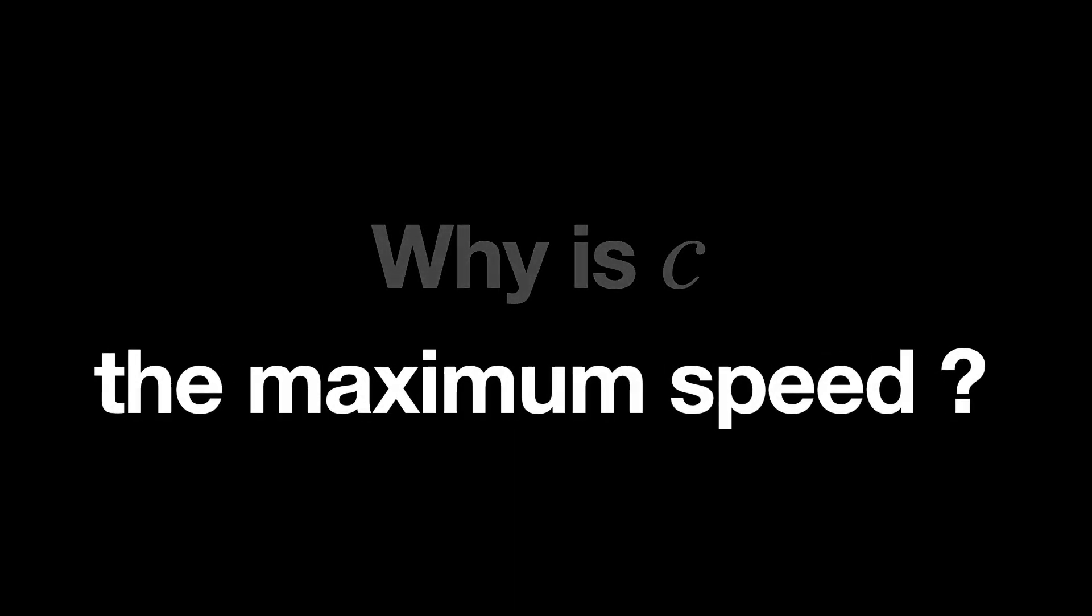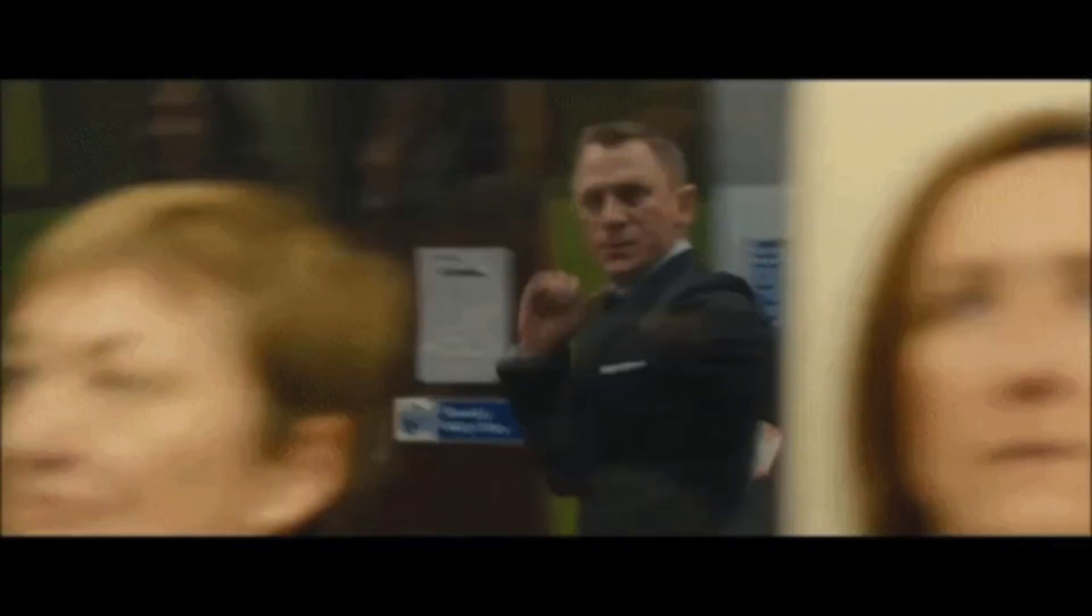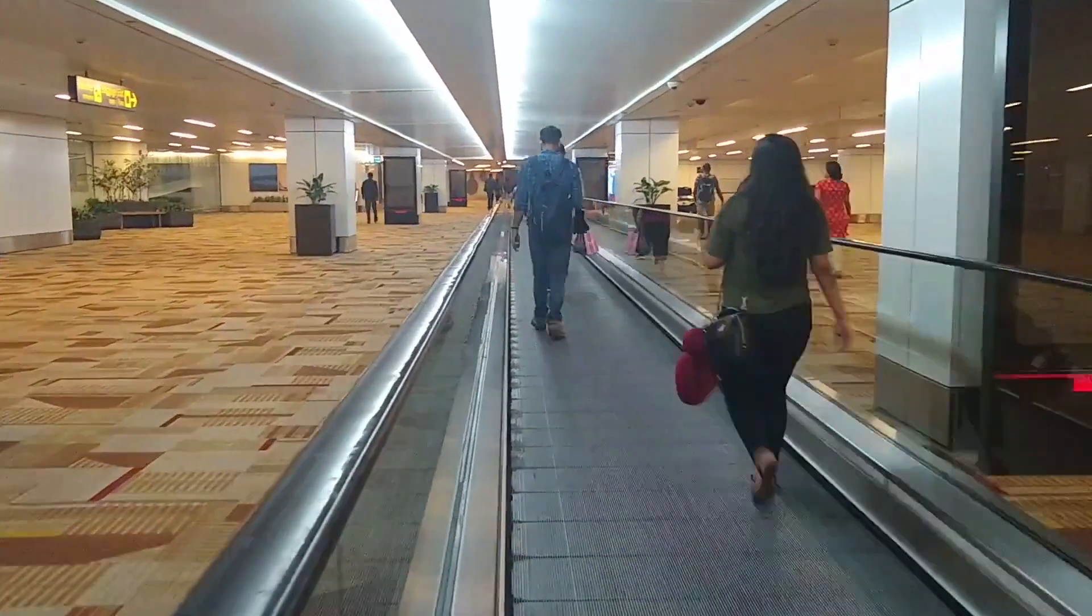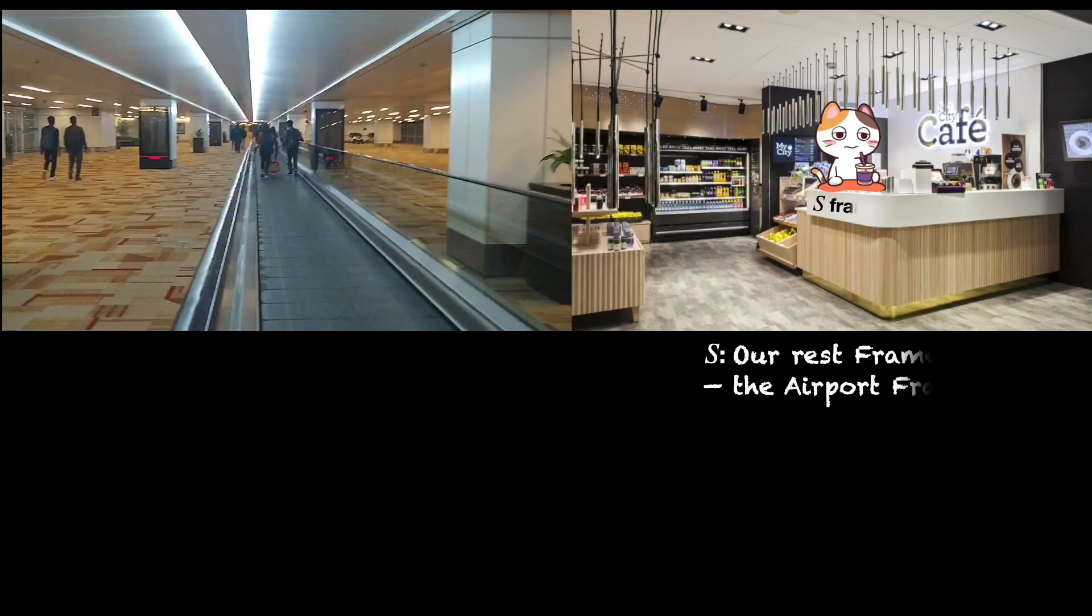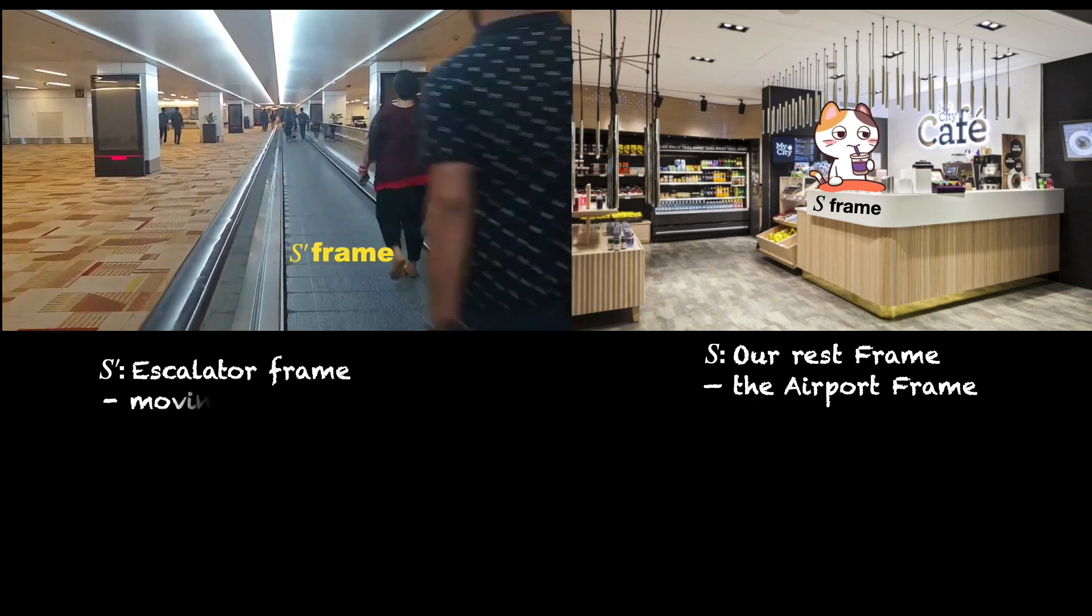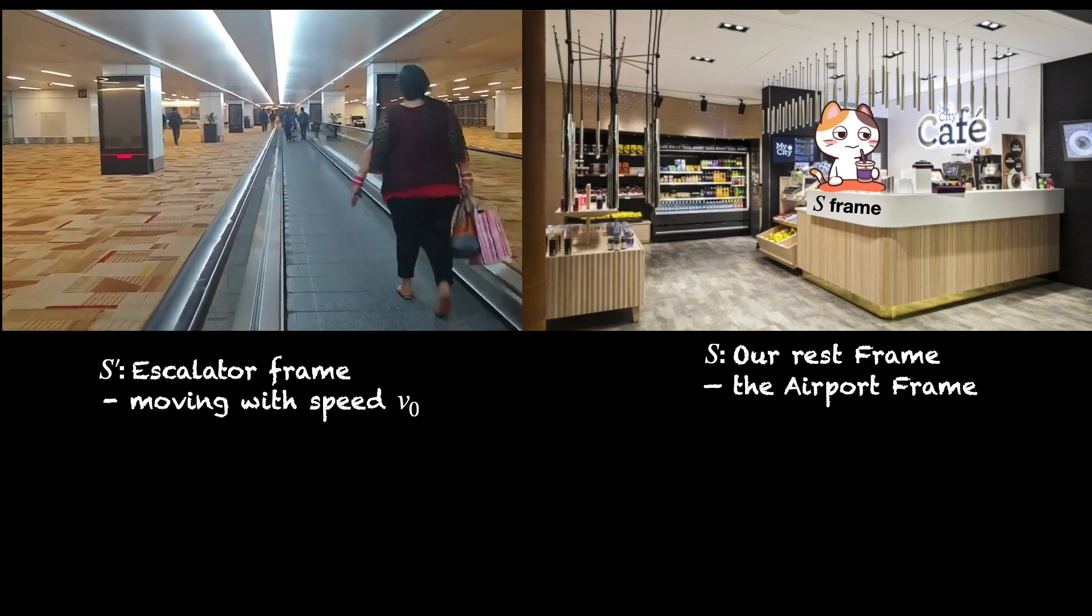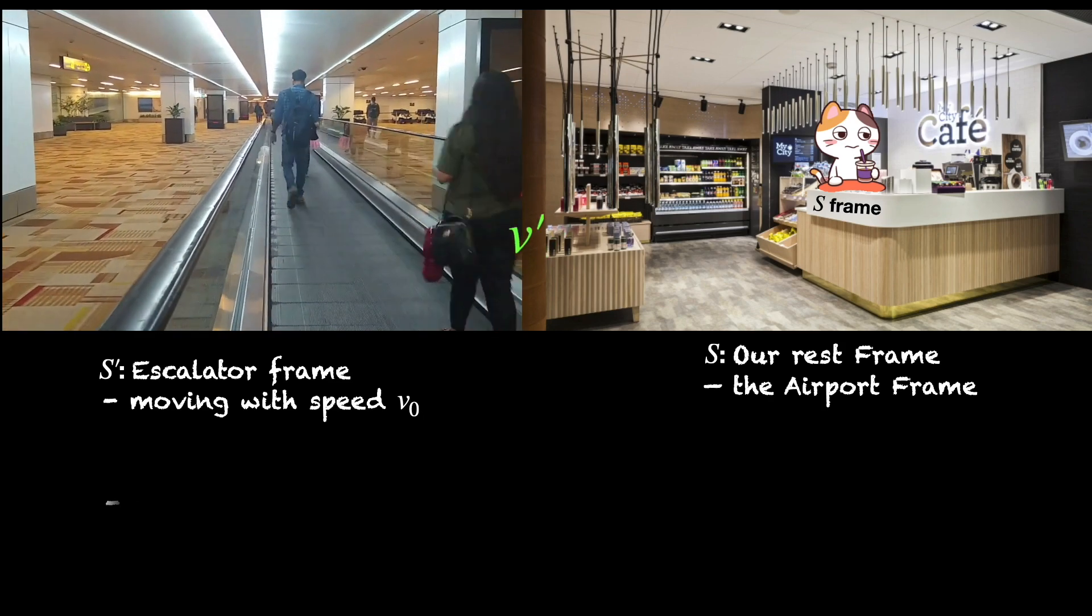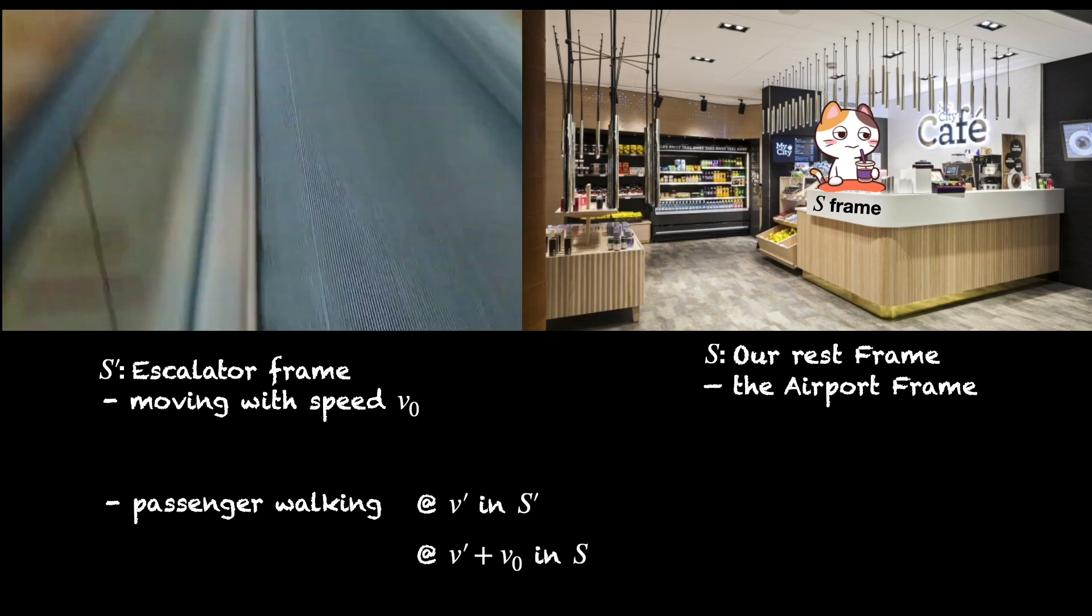To explain why this is the maximum value of speed possible, we first need to remind ourselves that speed or velocity depends on the observer's perspective. Imagine yourself sitting in an airport coffee shop looking at a passenger walking on one of those horizontally moving escalators. You are an observer in the inertial frame S, the airport frame. The escalator is the second inertial frame, let's say S', moving with a uniform velocity V0 with respect to the S frame. If the passenger is walking at a speed V' on the escalator, his speed is V' with respect to S' and V0 plus V' with respect to your S frame.